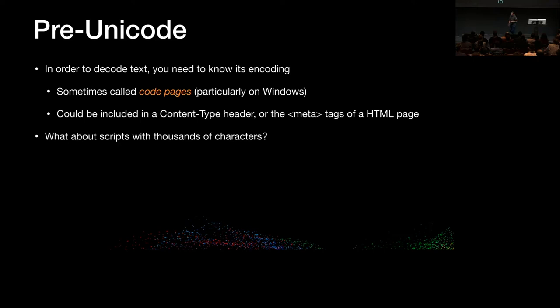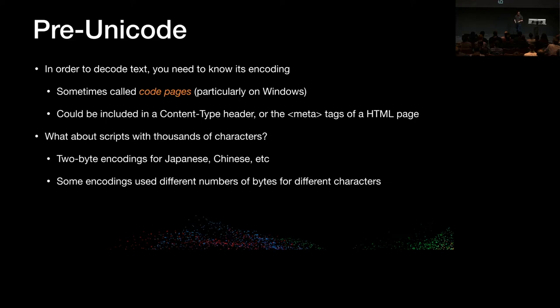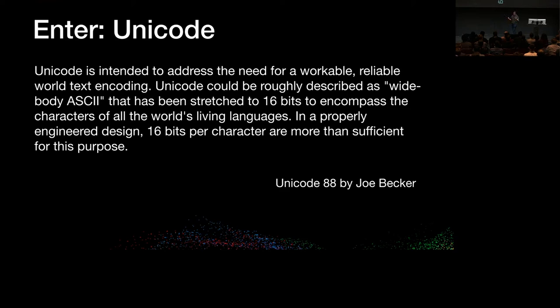But what about scripts with thousands of characters? Chinese and Japanese have more than 256 characters, so we developed two-byte encodings, and some encodings used multiple bytes for a single character. Things were getting complicated. This brings us to Unicode. A quote from the original 1988 paper by Joe Becker: 'Unicode is intended to address the need for a workable, reliable world text encoding. Unicode could be roughly described as wide-body ASCII — stretched to 16 bits to encompass the characters of all the world's living languages. In a properly engineered design, 16 bits per character are more than sufficient for this purpose.'